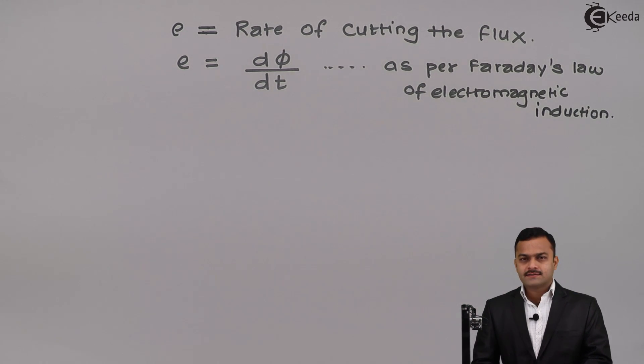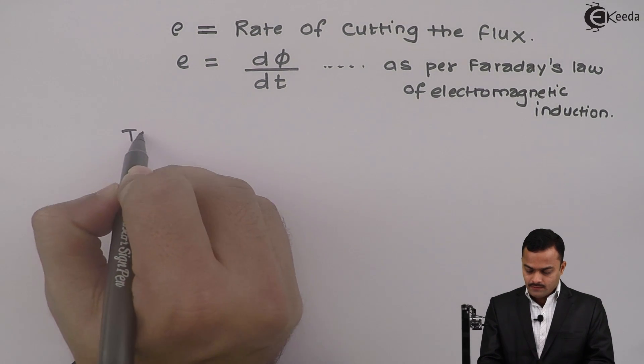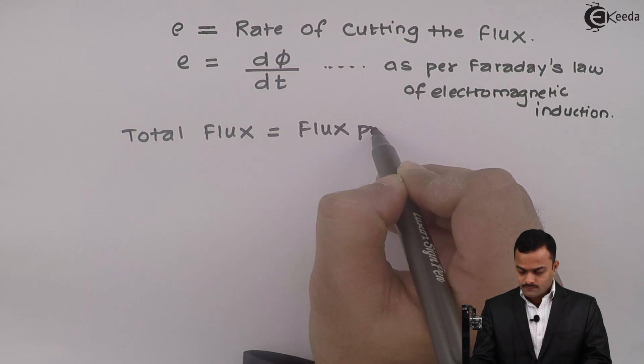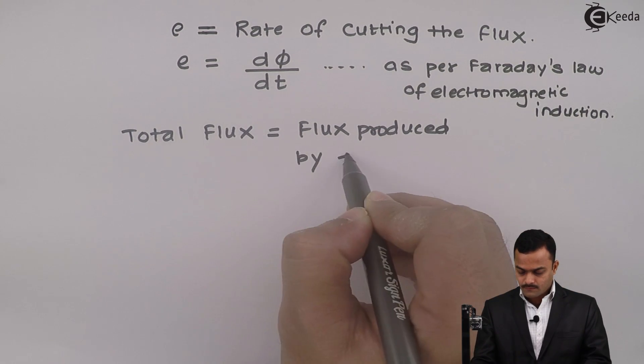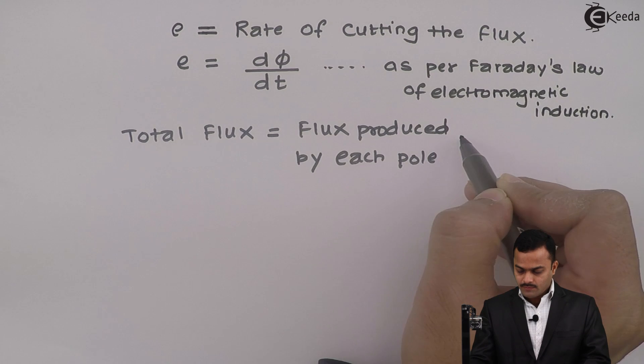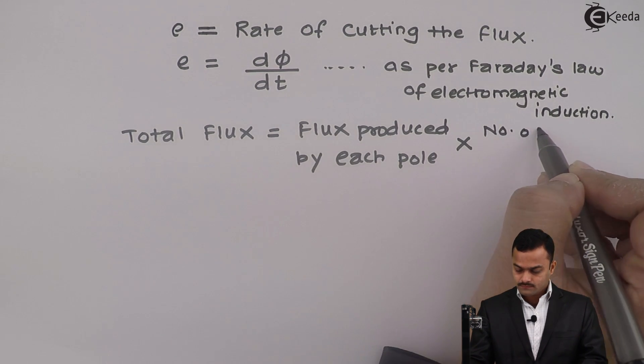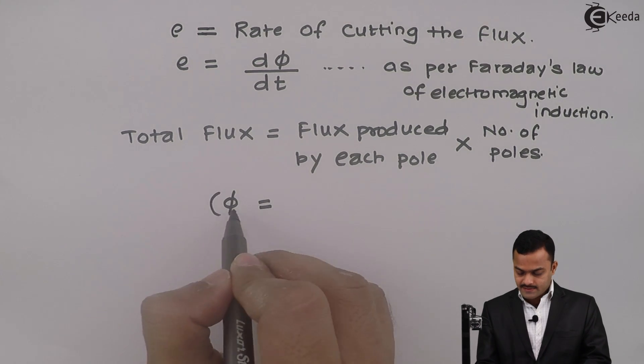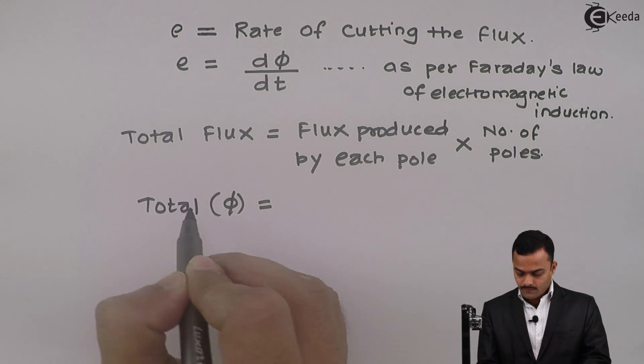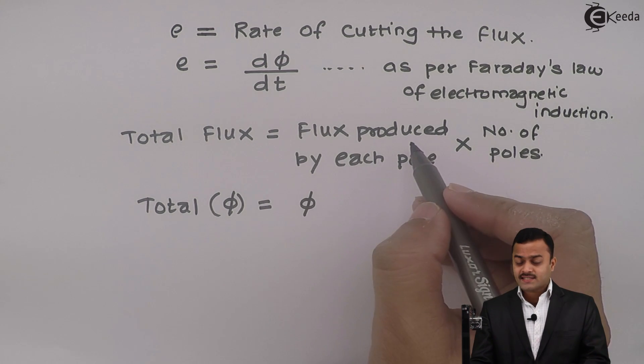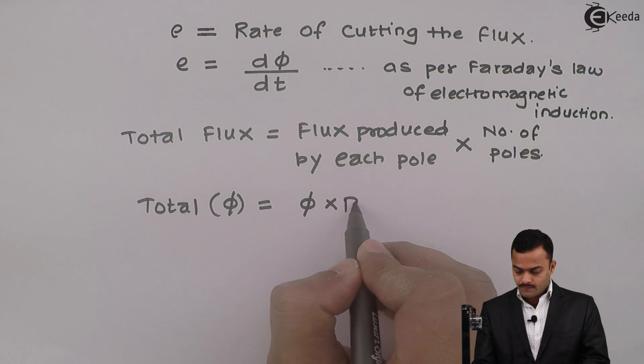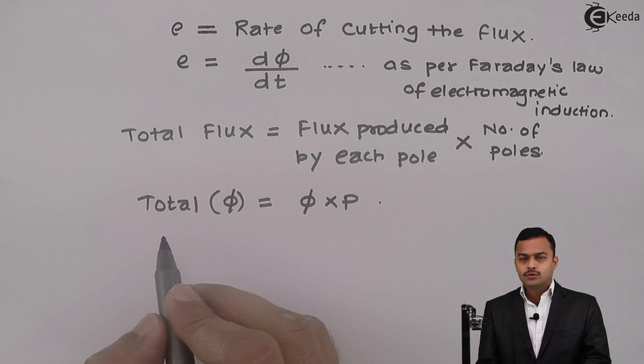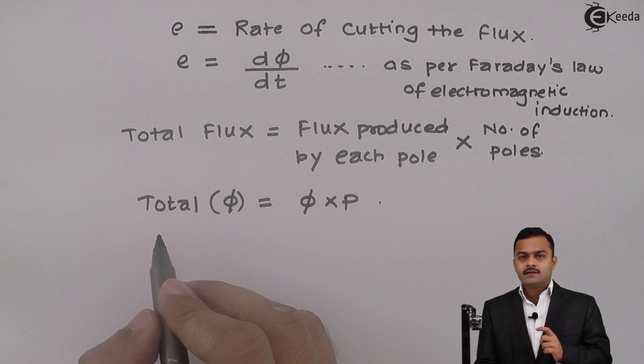Total flux in a DC machine will be flux produced by each pole multiplied with number of poles. So, this Φ, which is a total Φ, Φ will be defined as flux produced by each pole and number of poles are P. So, this Φ into P. Now, time taken to complete one revolution is nothing but a time period.